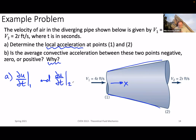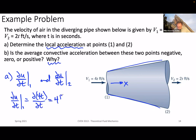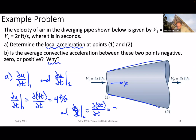For part A, the local acceleration: del u/del t at point one equals the partial of 4T with respect to T, which equals 4 feet per second squared. And del u/del t at point two equals the partial of 2T with respect to T, which equals 2 feet per second squared. Very straightforward calculus.